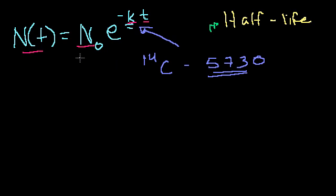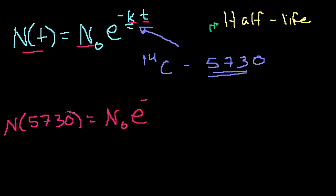So this tells us that after one half-life, t is equal to 5,730. N of 5,730 is equal to the amount we start off with, N sub 0, times e to the minus k times 5,730. That's how many years have gone by. And half-life tells us that after 5,730 years, we'll have half of our initial sample left.